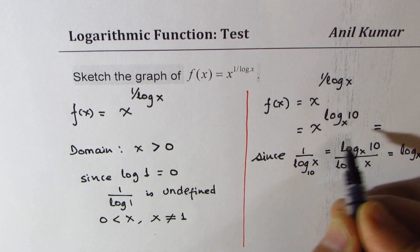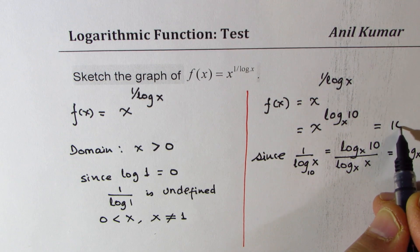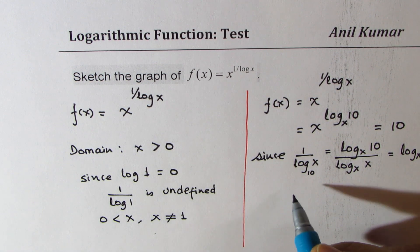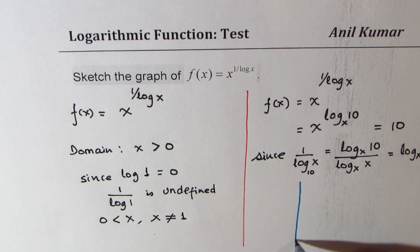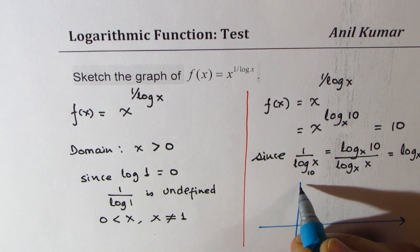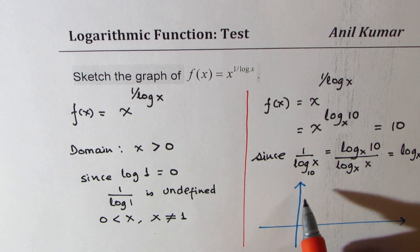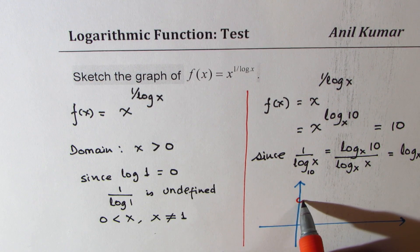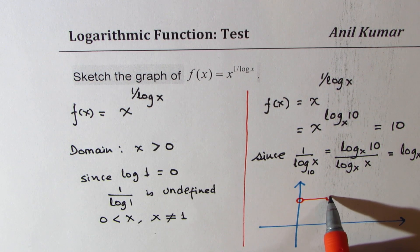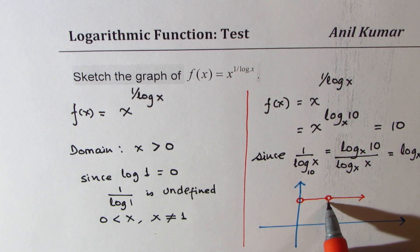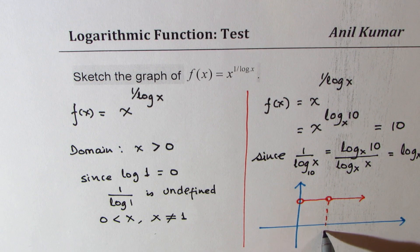What is that equal to? Using logarithm properties, we know x to the power of log base x of 10 equals the constant 10. Now it is much simpler to sketch the graph. We know the domain, and we understand this is actually a constant function equal to 10. Since x cannot be 0, there is a hole there, then a hole at x equals 1, and then the line continues to infinity for all other values of x.